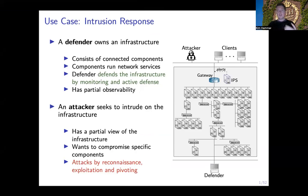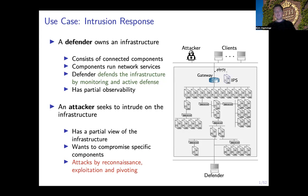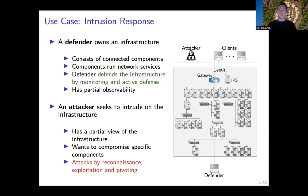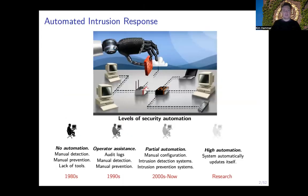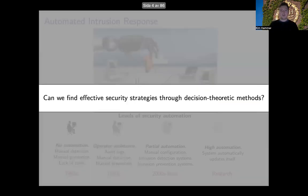The defender monitors the network and may take response actions. In addition, there is an attacker that seeks to intrude on the infrastructure and wants to compromise components. To achieve this, the attacker uses reconnaissance to find vulnerabilities and then exploits those vulnerabilities to gain access. We study this use case primarily from the defender's perspective, where the goal is to find automated strategies for responding to intrusions in real time. This is a long-standing goal in cyber security research, and a promising approach currently being investigated is the application of decision-theoretic and learning-based methods to achieve this automation.